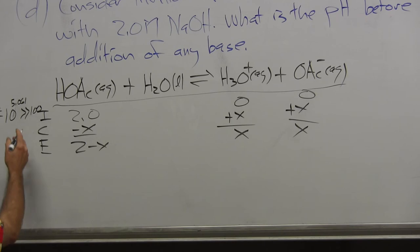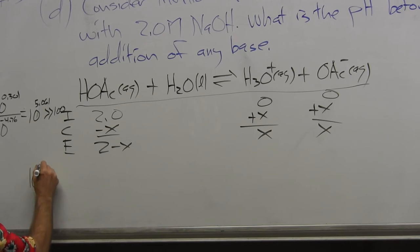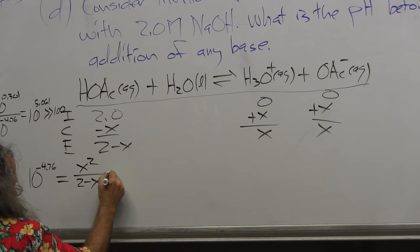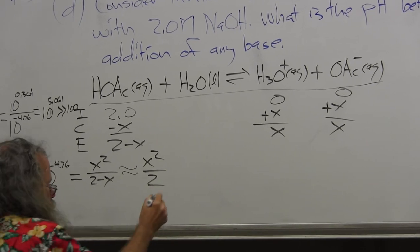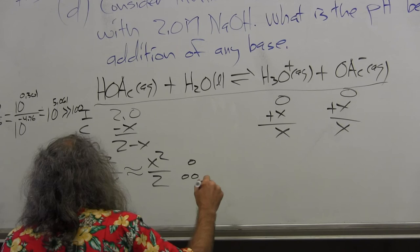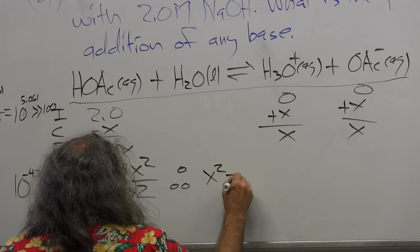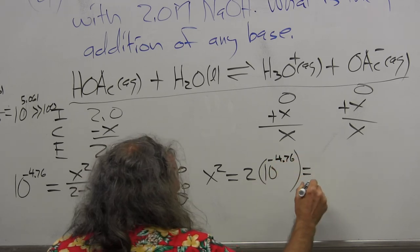And so now I want to start with my K, which is 10 to the minus 4.76. That's the reason we wanted to derive it in this form. This makes the problem easy. K equals X squared over 2 minus X. And now I use the approximation. It's about equal to X squared over 2. And so, therefore, X squared is equal to 2 times 10 to the minus 4.76.